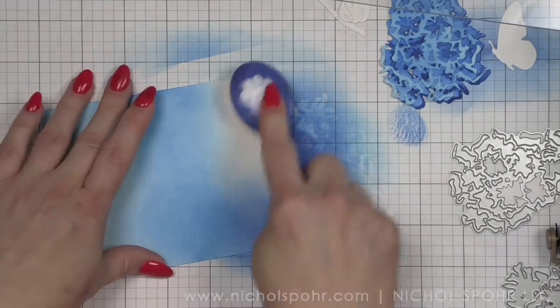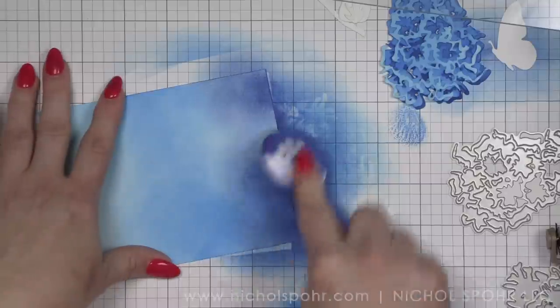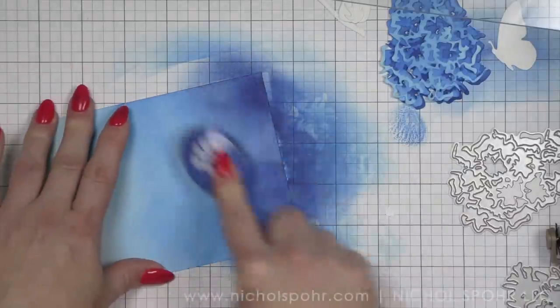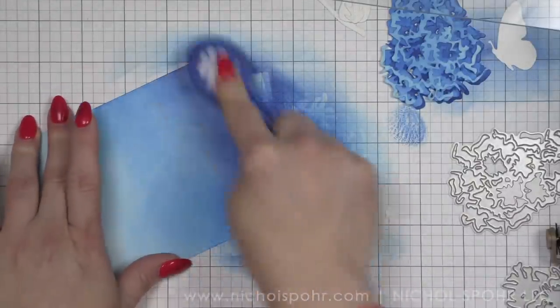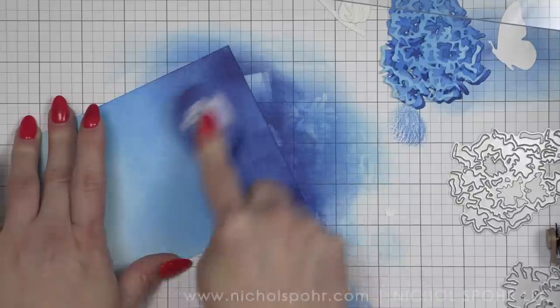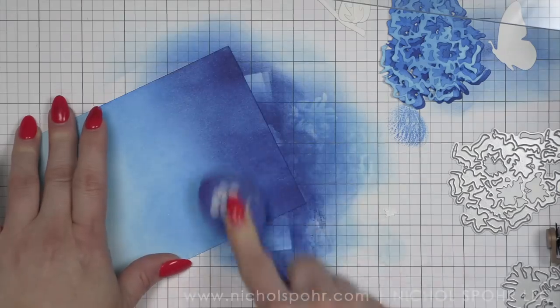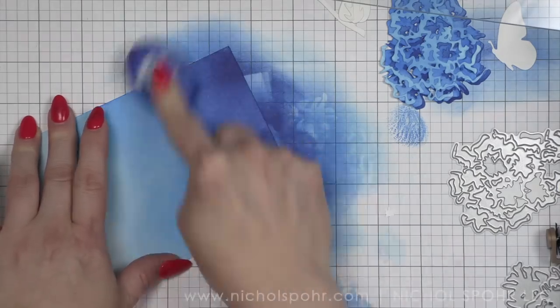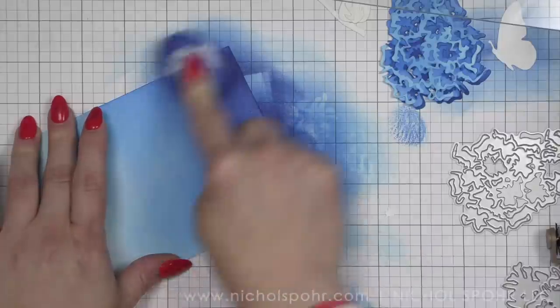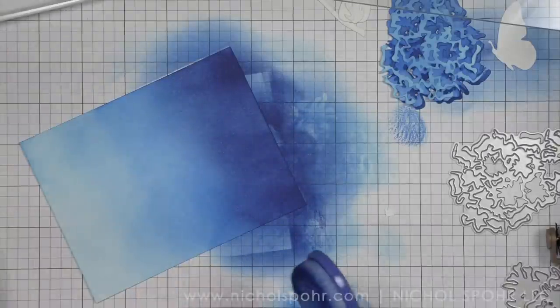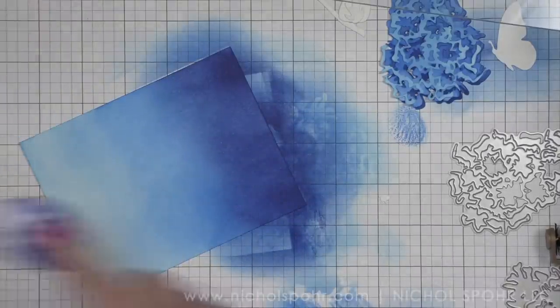To really make your dies take center stage, even though we're creating a tone on tone look, because I'm using all three of those same colors from Simon Says Stamp, we're going to do a couple things. We're going to add texture to our background, we're going to spritz or splatter our background with a mica stain, and then, of course, my go-to foam adhesive for popping up the elements.